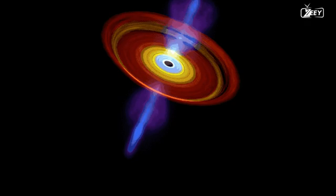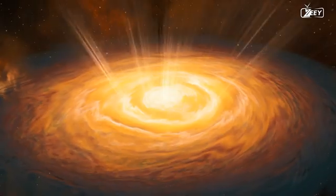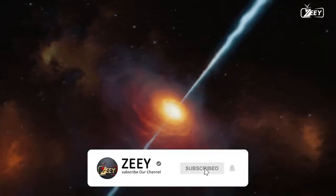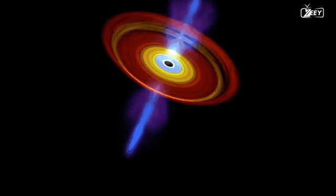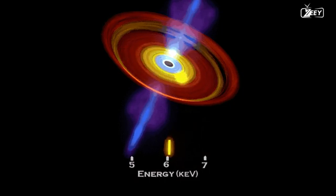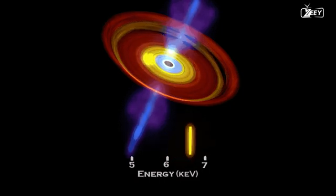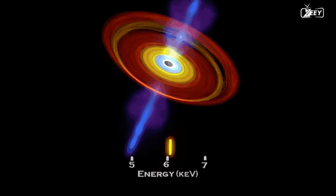It's crucial to understand the differences between an AGN, a quasar, and a blazar before diving into the finding. An extremely bright, compact region in the galaxy's core known as an active galactic nucleus, or AGN, emits radiation throughout the whole electromagnetic spectrum.